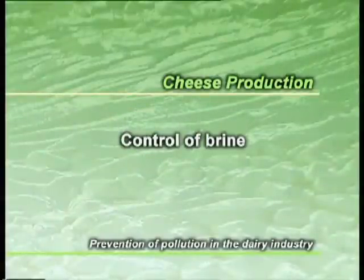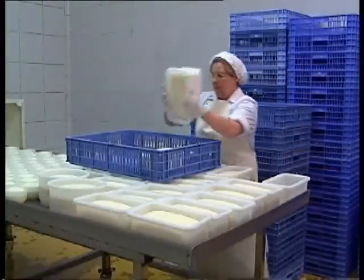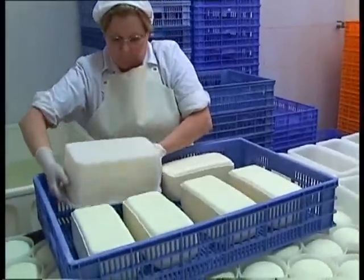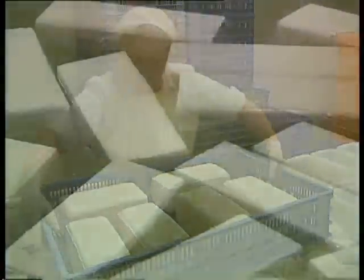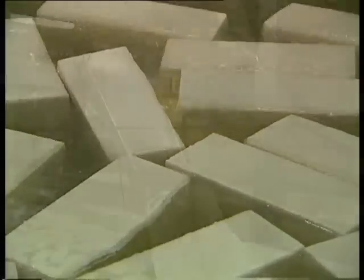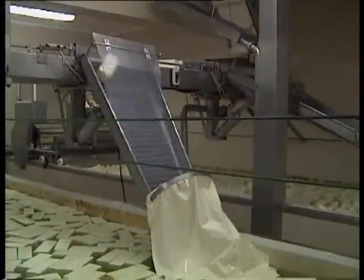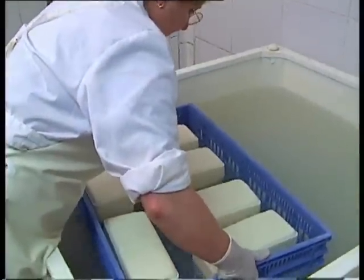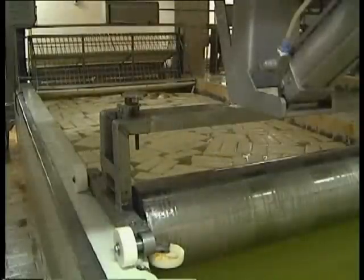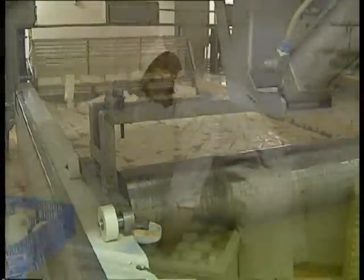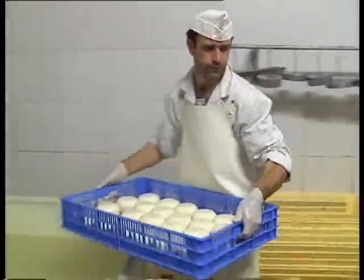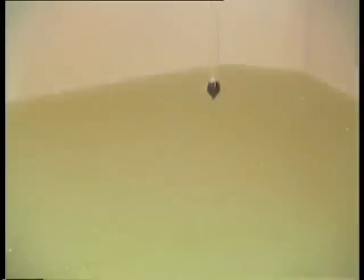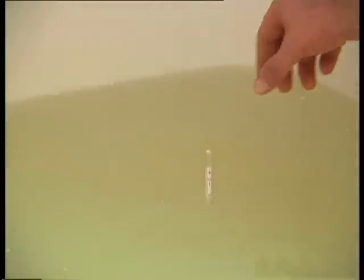Control of brine. Immersion of the cheese in brine, a sodium chloride water solution, is one of the methods most used in the salting of cheese. Brine can deteriorate during its use as it takes on soluble substances from the cheese, or owing to a possible microbiological contamination of human origin, or from the water or tools used. Establishing a quality control plan of brines will prevent the generation of rejected products.